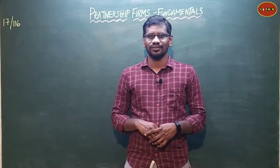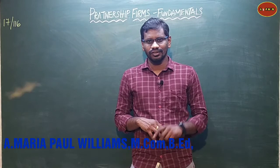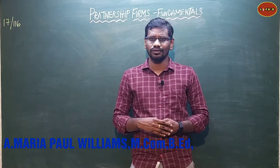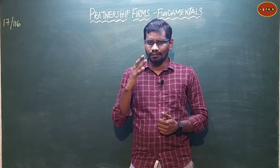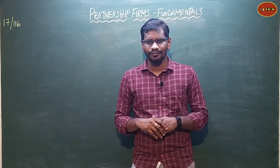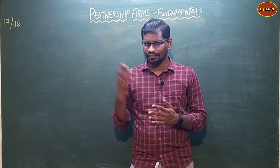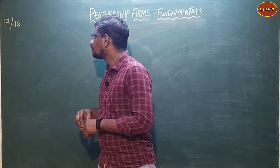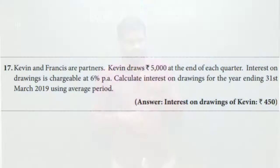Hi everyone, welcome to Lefa's account. This is for 12th standard accounts, Chapter 3: Accounts of Partnership Firms and Fundamentals - specifically interest on drawings using the average profit method. In this video, we cover quarterly-wise interest on drawings calculation, sum number 17 from your textbook page 116. Kevin and Francis are partners. Kevin draws Rs.5,000 at the end of each quarter. Interest on drawings is chargeable at 6% per annum. Calculate interest on drawings for the year ending 31st March 2019 using the average period method.